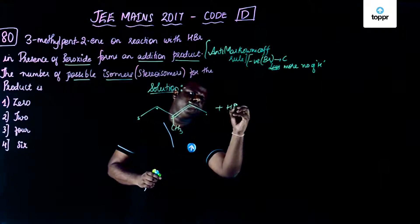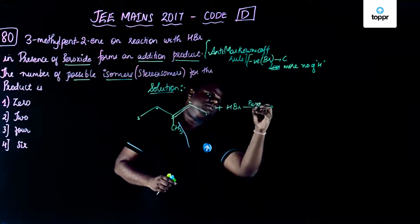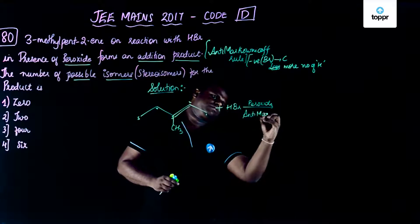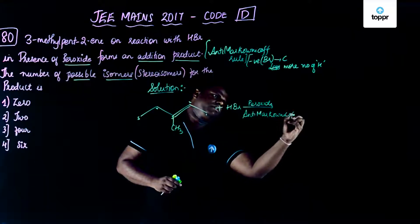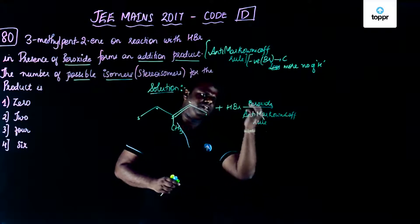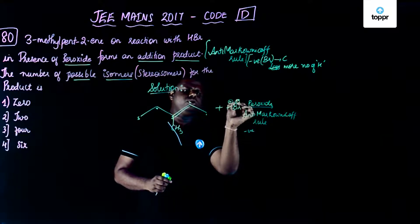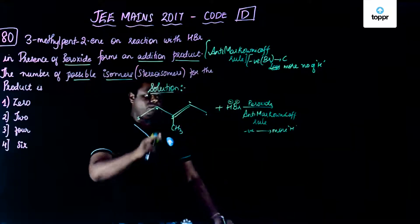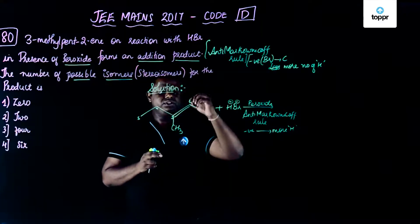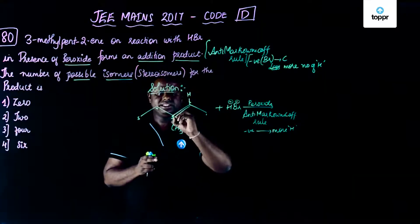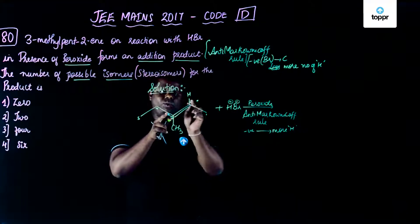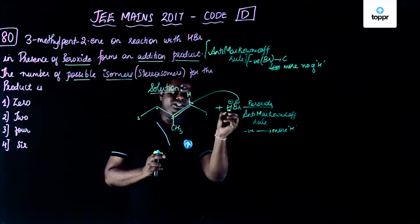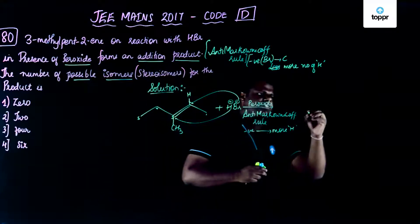Now when it is treated with HBr in presence of a peroxide, what exactly happens? So this is basically anti-Markonikov's rule. Anti-Markonikov's rule which says that negative part of the reagent that is Br- would go to that carbon containing more number of hydrogens. So what exactly is going to happen over here? So if you could see here there is one hydrogen over here and in this carbon all the valencies are satisfied already. So one hydrogen and zero hydrogen. So definitely Br is going to go to this carbon. So H would be going to carbon atom number 3.